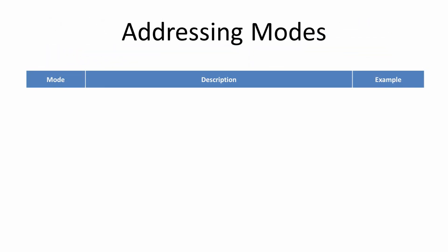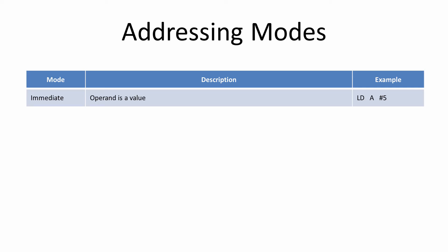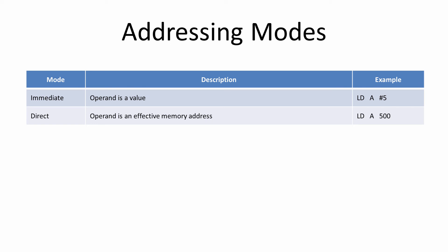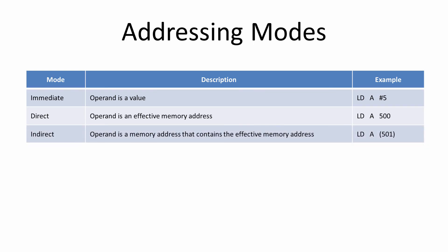To summarise: if the operand is the actual value to be operated on by the instruction, this is known as immediate addressing. If the operand is a memory address that contains the value to be operated on, it's known as direct addressing, also sometimes called absolute addressing. If the operand is a memory address that contains the effective memory address, the mode is known as indirect addressing — slower than direct addressing because it means accessing the memory more than once. If the operand is a processor register containing a value, we have what's known as register direct mode. This is the fastest form of addressing because there's no need for the processor to access main memory — the data is right where it needs to be.